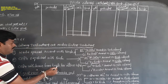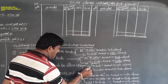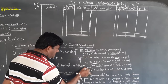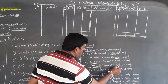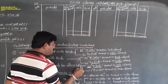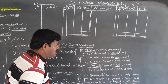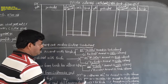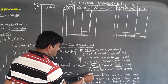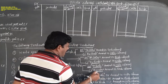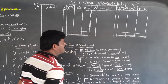Cash withdrawn from bank for office use is the reverse of the previous transaction. On the debit side, record 'To Bank' with the amount in the cash column. On the credit side, write 'By Cash' with the amount in the bank column.